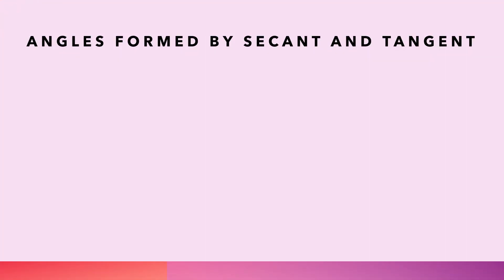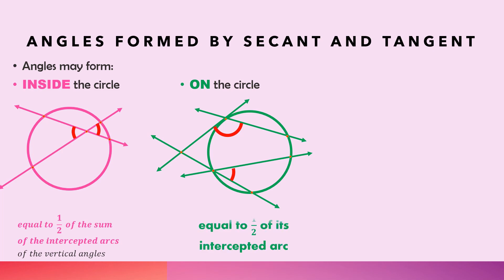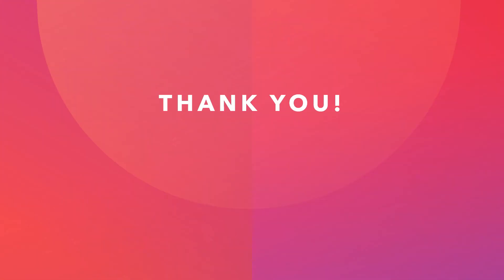To summarize: angles formed by secants and tangents are divided into three types. Angles formed inside the circle: use one half of the sum of the intercepted arcs. Angles formed on the circle: use one half of the intercepted arc. Angles formed outside the circle: use one half of the difference of the intercepted arcs. Thank you for watching, and I hope you learned something from this video.